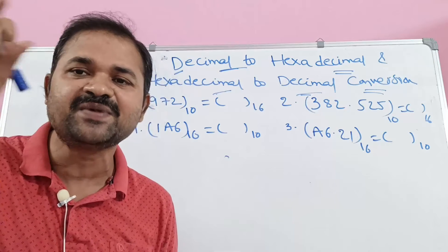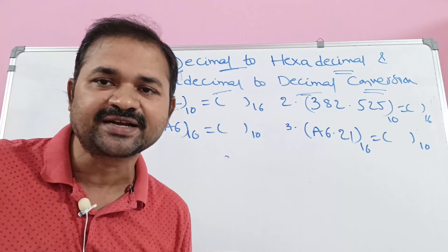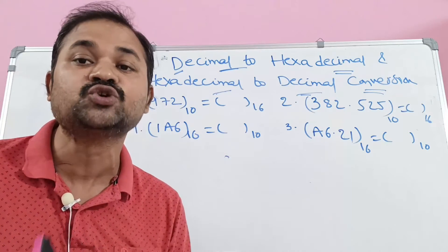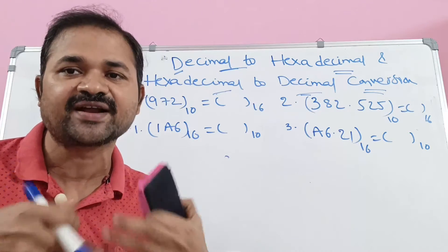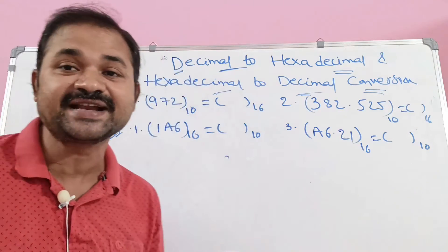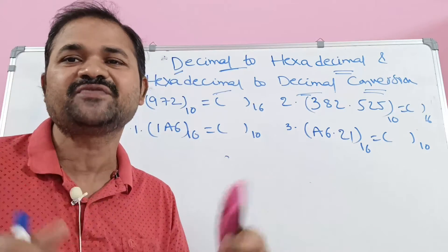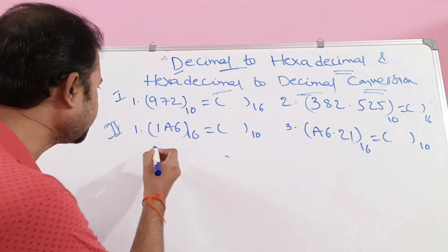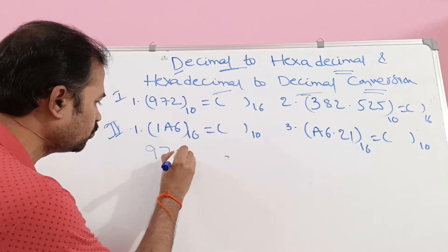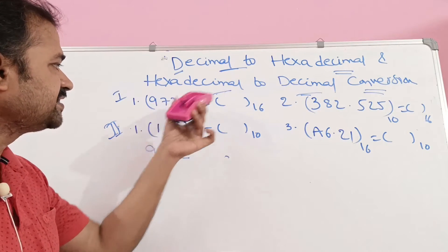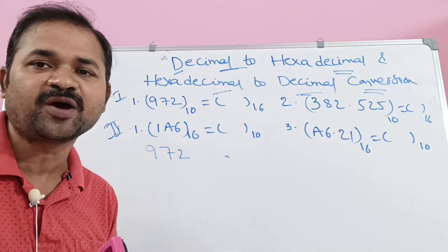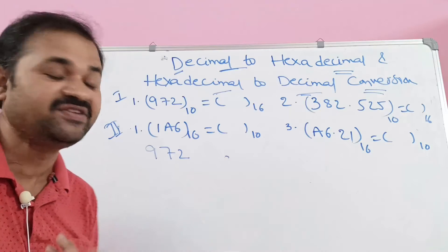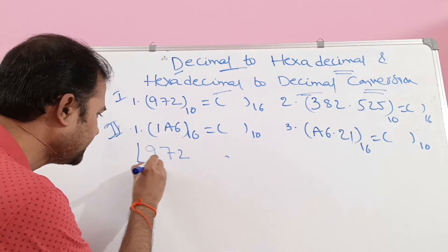Suppose if we want to convert decimal to binary, the target system is binary, so we perform division by 2. For remembering purposes, let us assume that D stands for division. So to convert to hexadecimal, we need to perform the division operation by 16.